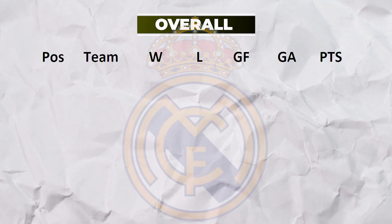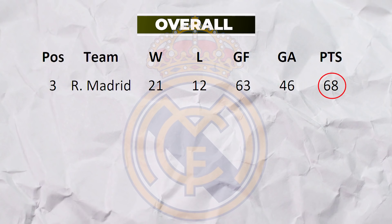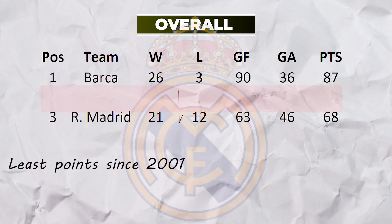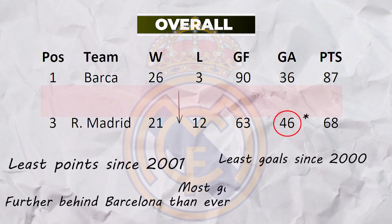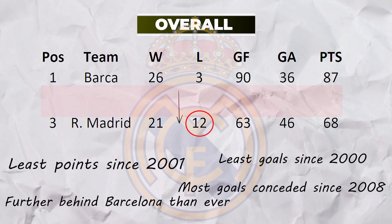As a result, Real had one of their worst seasons to date, finishing with just 68 points — their lowest since 2001 — and finished further behind Barcelona than they ever had. They were blunt in attack, with 63 goals being their least since 2000, and the 52 they conceded is their most in a decade. In La Liga, they lost 12 games, which was their worst since 1974.